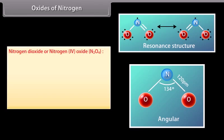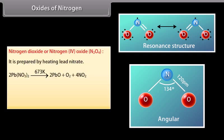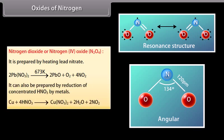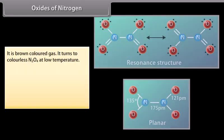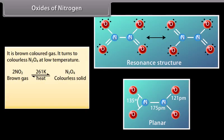Nitrogen dioxide (NO2, nitrogen 4 oxide) is prepared by heating lead nitrate. It can also be prepared by reduction of concentrated HNO3 by metals. It is a brown-colored gas that turns to colorless N2O4 at low temperature. It is acidic in nature.